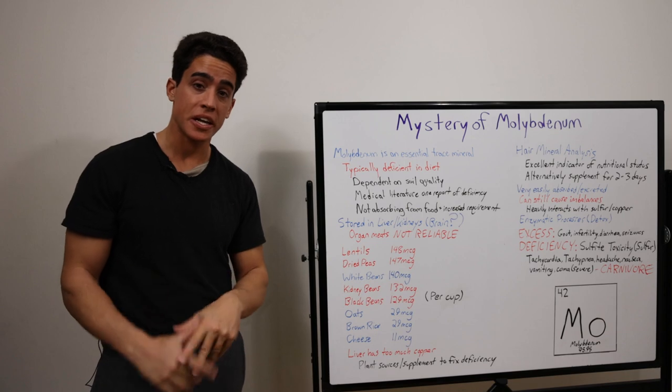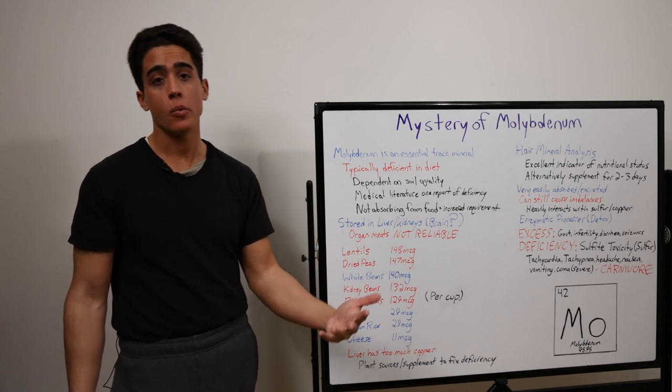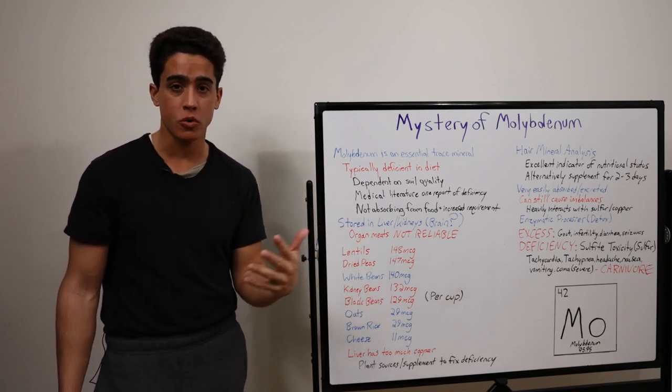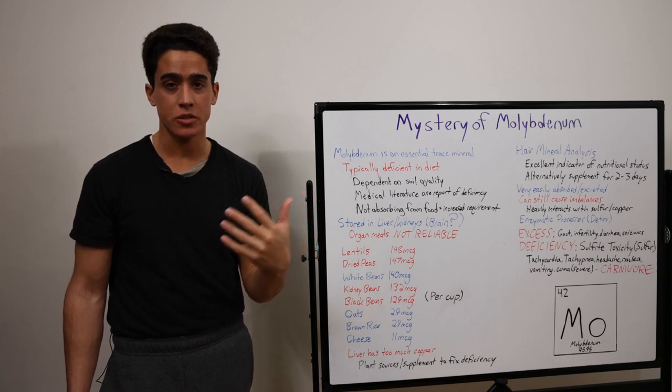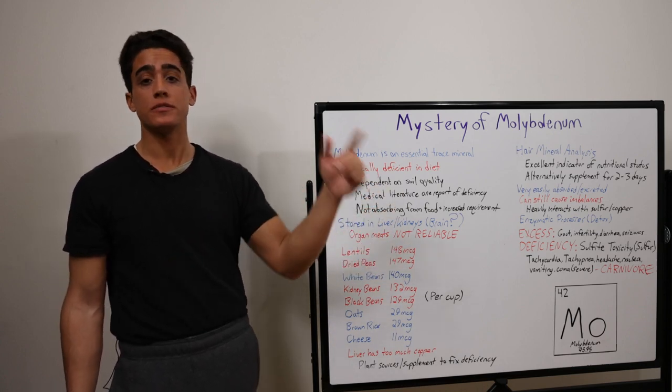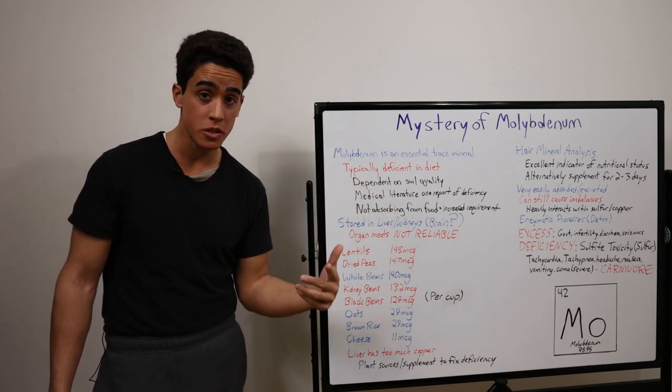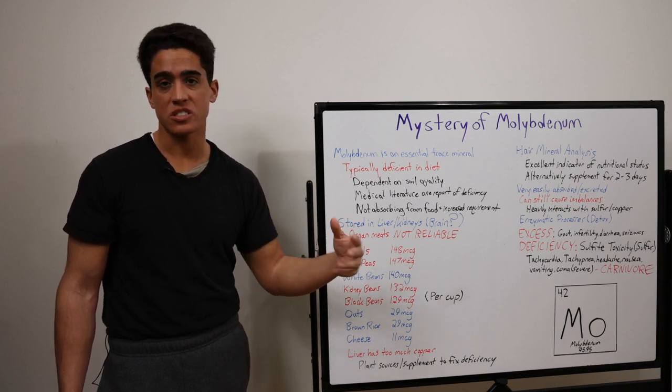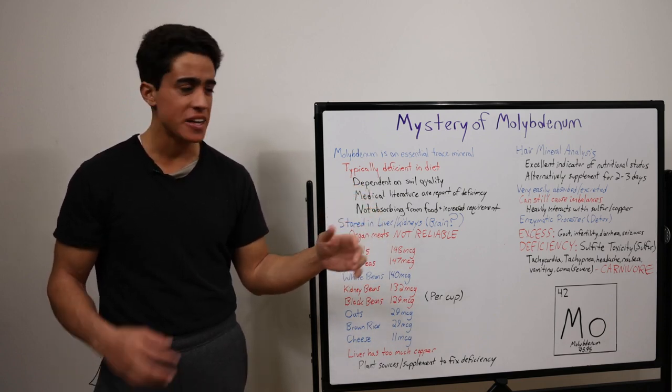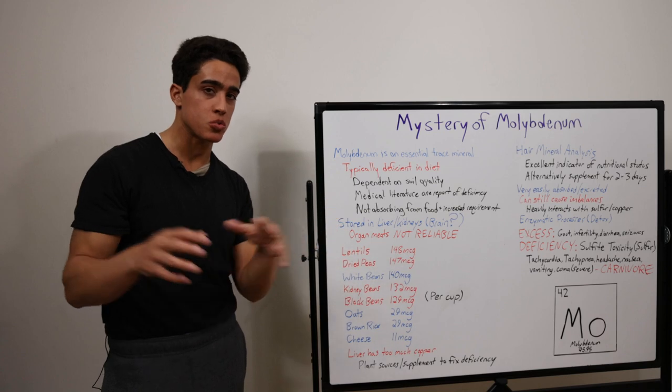So excess amounts of molybdenum can cause copper deficiency, which leads to anemia, bone deformities, central nervous system issues, and excess amounts of sulfur can cause a molybdenum deficiency, which results in just a ton of oxidative stress. And there's many more interactions to read about.